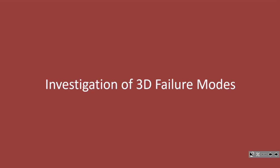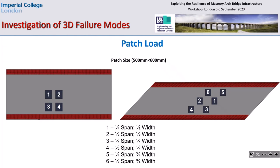Using the same geometries from both validation examples, we investigated the 3D behavior of square and skew masonry arch bridges under patch loads. For the square bridge we applied loads at four locations: quarter span, mid-span, quarter width, and mid-width. For the skew bridge we added two cases at three-quarter width.